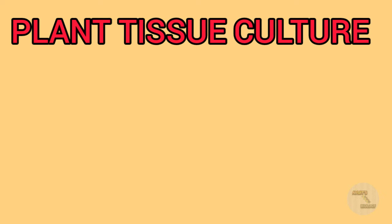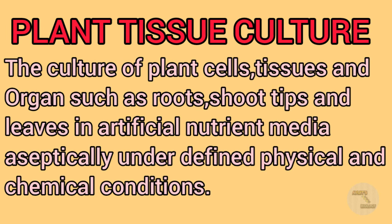Plant cells or tissues can continue to grow if they are supplied with appropriate nutrients and conditions. The definition of plant tissue culture is: the culture of plant cells, tissues, and organs such as root and shoot tips and leaves in artificial nutrient media, aseptically, under defined physical and chemical conditions, is referred to as plant tissue culture.